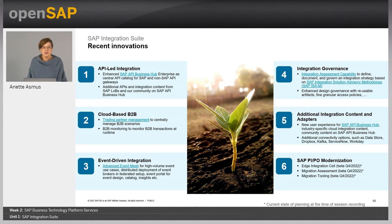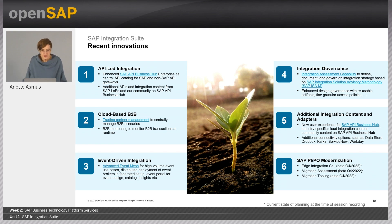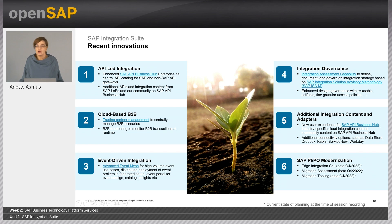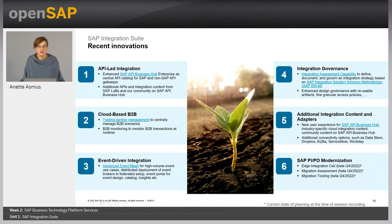The SAP Integration Suite offering is constantly being evolved to cater for customer requirements as well as the latest industry trends and standards. Recent innovations include, first, we keep on investing in API-led integration — for example, with the API Business Hub Enterprise, where customers can have their own local and custom API Business Hub to publish APIs from SAP and non-SAP gateways with their own clients. The second key highlight is B2B integration — integration of business partners — where we have delivered a Trading Partner Management capability for customers to manage and monitor their B2B scenarios.